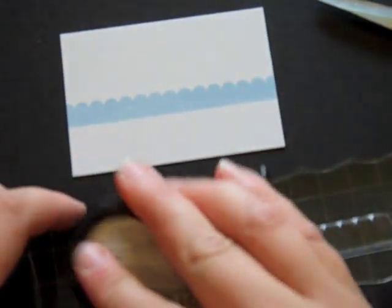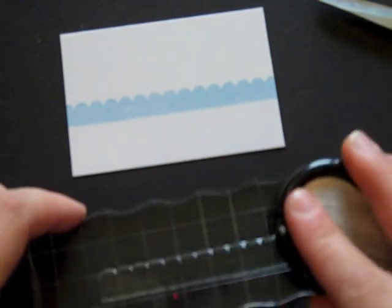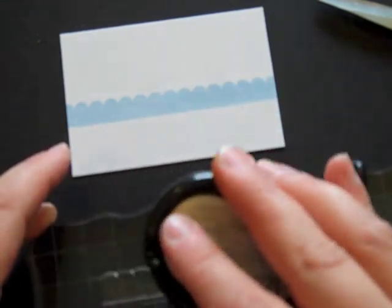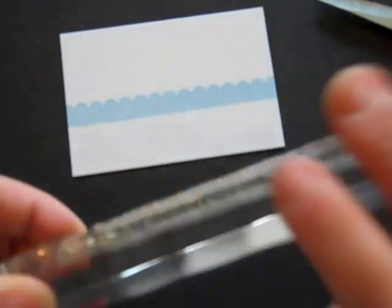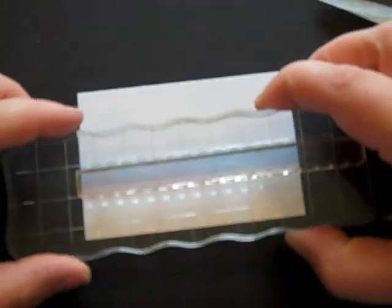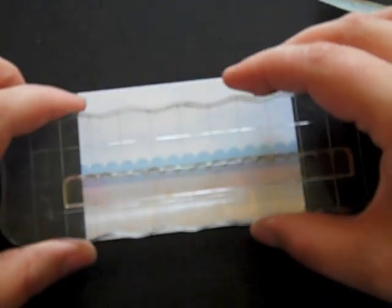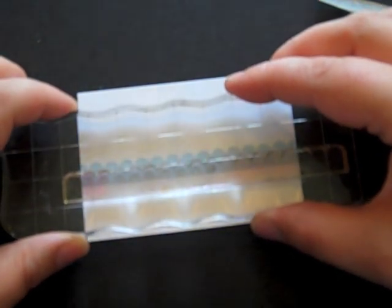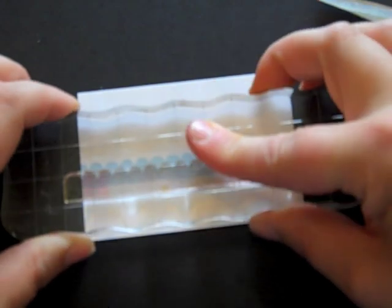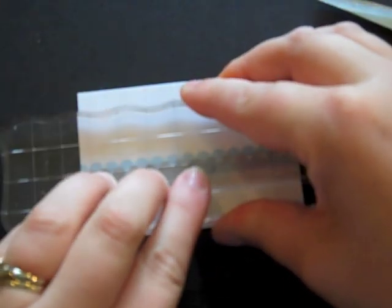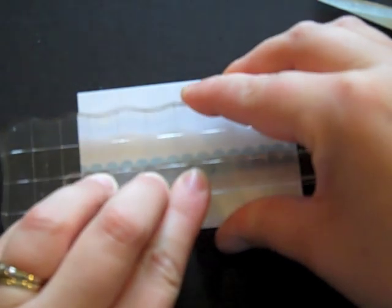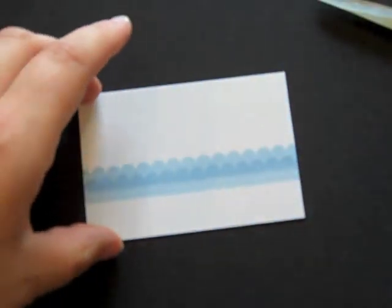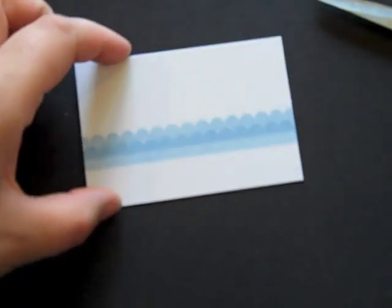I'm actually going to go ahead and ink this up with Spring Rain again. I'm going to do my second impression just off of the center of the last impression so that the top rounded edge of a scallop is underneath the point in between scallops from the layer above. So that's my second layer.